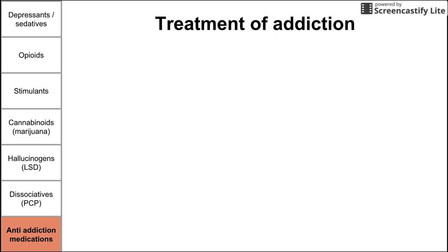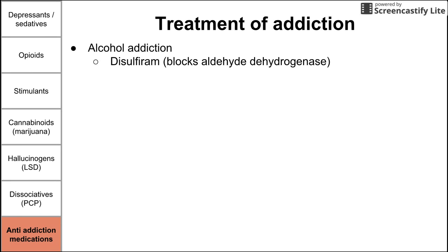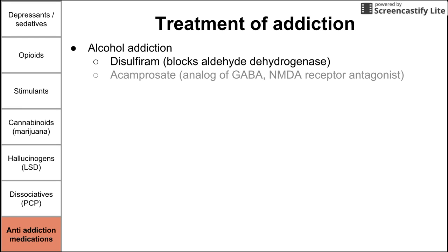Now let's talk about anti-addiction medications — treatments for addiction for some of these substances. For alcohol addiction, you can give disulfiram, which blocks aldehyde dehydrogenase and essentially increases acetaldehyde levels in the body. Acamprosate is an analog of GABA — since alcohol increases the effects of the GABA receptor, giving a GABA analog can be used in treatment of addiction. Acamprosate's full mechanism is somewhat unknown, but it's also an NMDA receptor antagonist.